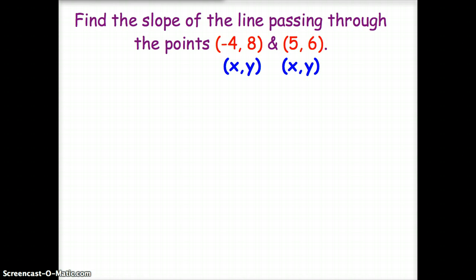This is where those x2, x1, y2, y1 values come into play. The twos mean that that's coming from the second ordered pair, or 5, 6. The ones mean that they're coming from the first ordered pair, or negative 4, 8.